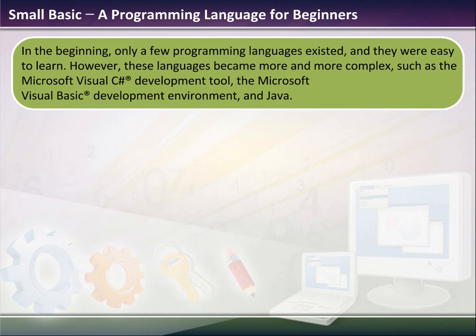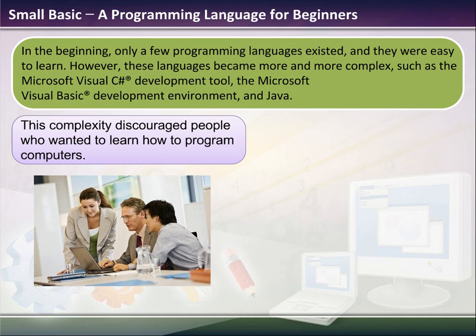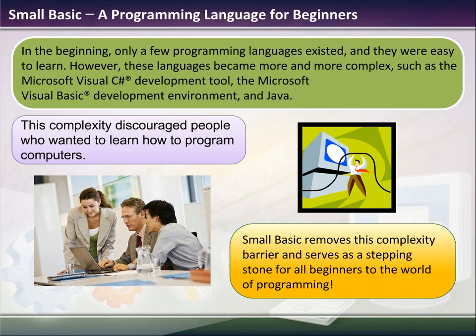In the beginning, there were only a few programming languages and they were easy to learn. However, as computers developed, languages became more and more complex, such as Microsoft Visual C Sharp, which is a development tool, and Microsoft Visual Basic. Small Basic is kind of a watered-down version of Visual Basic. Java is made by Sun Systems, which is a different company. This complexity discouraged people from wanting to learn how to program computers because the commands and the arguments were too complicated. So Small Basic removes all the complexity and focuses on just basic commands for beginning programmers.